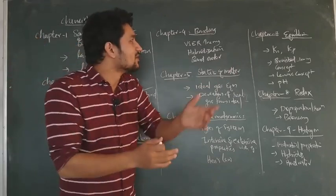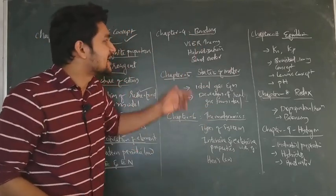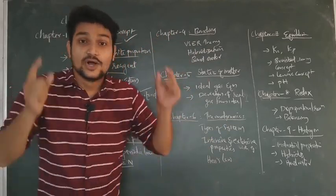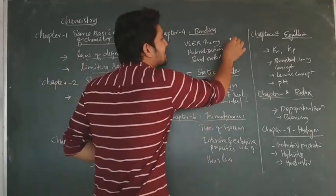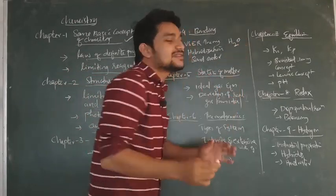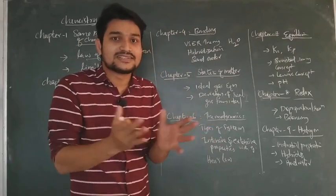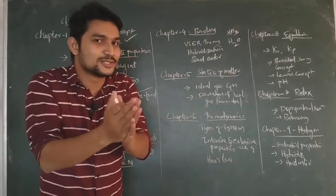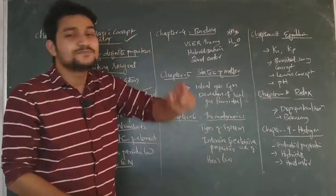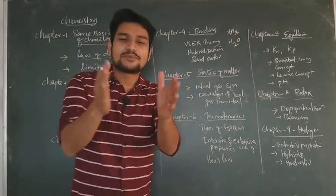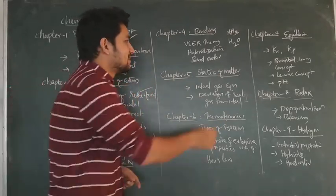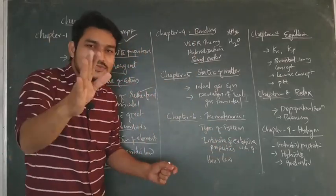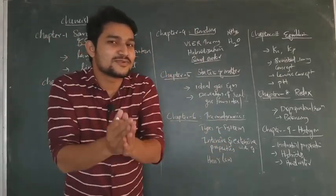In chapter 4, we will talk about chemical bonding. We will talk about VSEPR theory — VSEPR theory and its exceptions. You will learn about H2O and NH3 molecules and their shapes. Then we will talk about hybridization — what hybridization is. Then bond order. We will learn the molecular orbital theory and bond order for the examination.